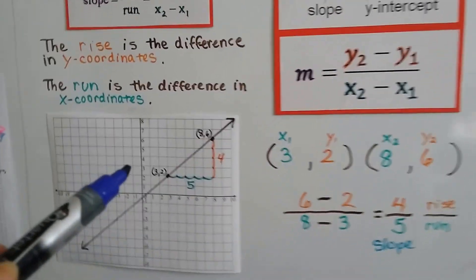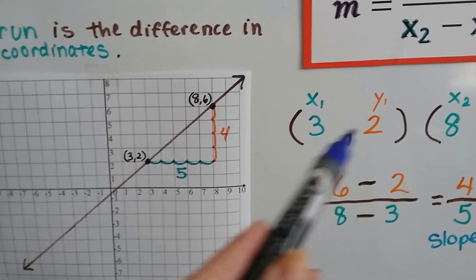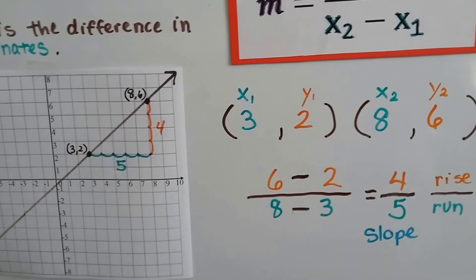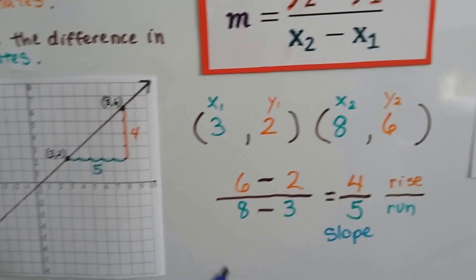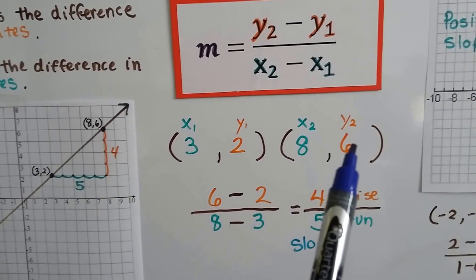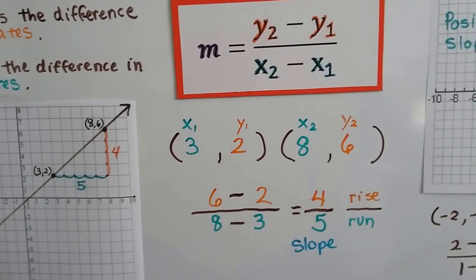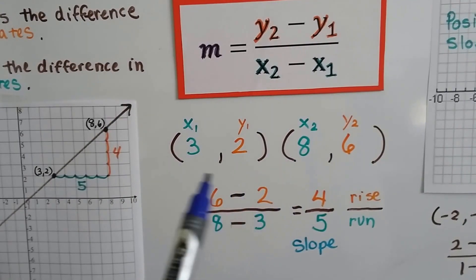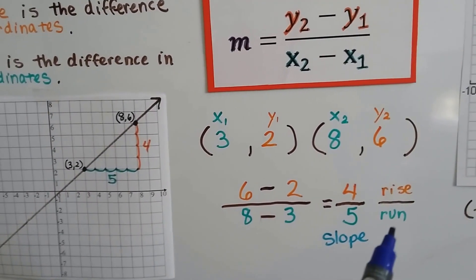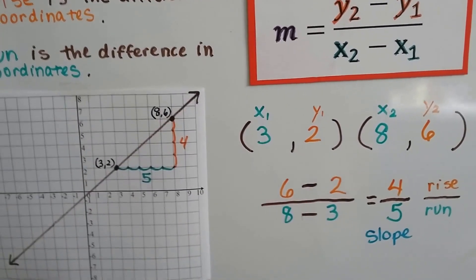So what we do is we take these ordered pairs. 3 and 2 for our x1, y1. And 8 and 6 for our x2, y2. Because we choose from left to right. And we follow this formula. We subtract y2 minus y1. And we get 4. And then we do x2, 8, minus 3. That gives us a 5. So our slope, our rise over our run, is 4 fifths. And we saw that here. It's 4 over 5.